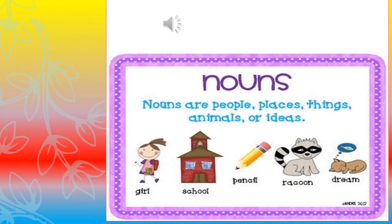First, we will have a small recap of what a Noun is. Nouns are people, nouns are places, nouns are things, nouns are animals or ideas. Specifically, a Noun is the name of a person, place, animal or thing. Nouns are also called naming words. As you can see in the picture: girl, school, pencil, raccoon and dream — all these are examples of a Noun.